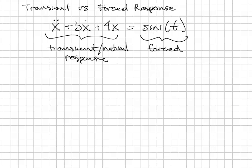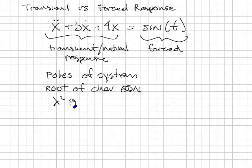The transient response is characterized by the poles of the system, which come from the roots of the characteristic equation. In this case, that would be λ² + 3λ + 4 = 0, and we would find λ₁ and λ₂.